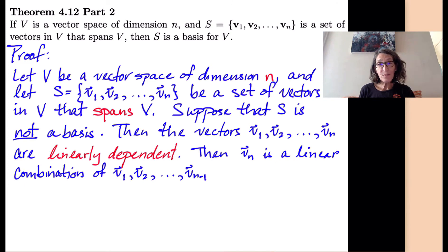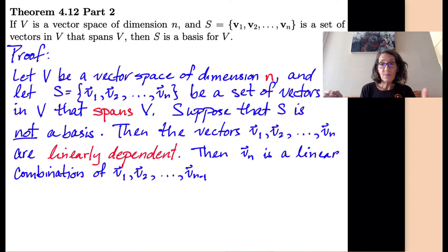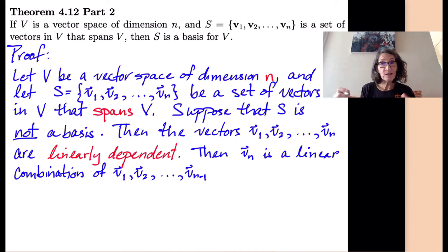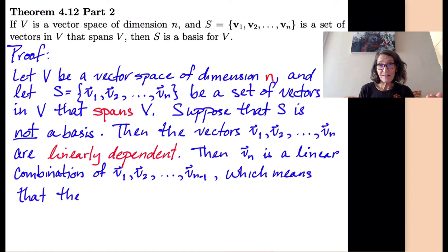We already know that s — all n of the vectors — spans v. So any arbitrary vector in the vector space can be written as a linear combination of v1, v2, ..., vn. But now, since vn is really a linear combination of v1, v2, ..., v_{n-1}, any linear combination of all n vectors can really just be rewritten as a linear combination of the first n minus 1 vectors. So the slightly smaller set {v1, v2, ..., v_{n-1}} spans the vector space.